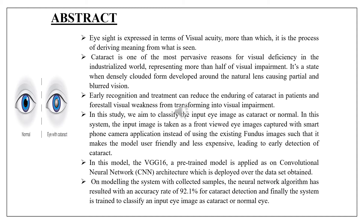The input image is taken as a front-viewed eye image captured with a smartphone camera application, instead of using existing fundus images, making the model user-friendly and less expensive, leading to early detection of cataract. In this model, VGG16, a pre-trained convolutional neural network architecture, is applied and deployed over the dataset. The neural network algorithm has resulted in an accuracy rate of 92.1% for cataract detection, and the system is trained to classify an input eye image as cataract or normal.